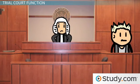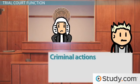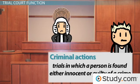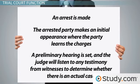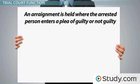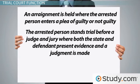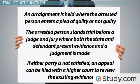I plead not guilty. I meant to kick her car. Criminal actions are trials in which a person is found either innocent or guilty of a crime. Criminal trials generally unfold like this: an arrest is made; the arrested party makes an initial appearance where the party learns the charges; a preliminary hearing is set and the judge will listen to any testimony from witnesses to determine whether there is actually a case; an arraignment is held where the arrested person enters a plea of guilty or not guilty; the arrested person stands trial before a judge and jury where both the state and the defendant present evidence and a judgment is made. If either party is not satisfied, an appeal can be filed with a higher court to review the existing evidence.